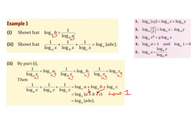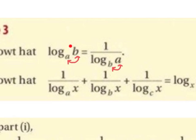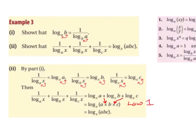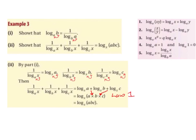In Part 2, we want to show that 1 divided by log base a of x, plus 1 divided by log base b of x, plus 1 divided by log base c of x, equals log base x of abc. We are going to use the result from Part 1, which showed that log base a of b equals 1 divided by log base b of a. The B and the A swap places and we just have 1 over. So we are going to rewrite each of these fractions in the form of log base a of b.